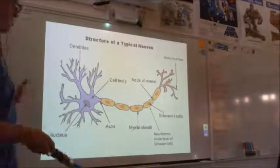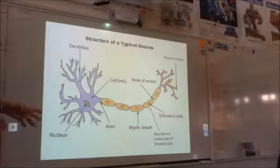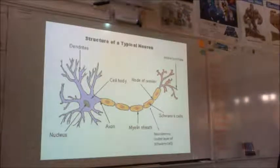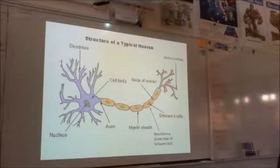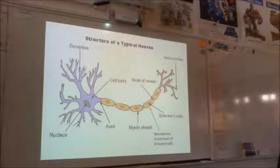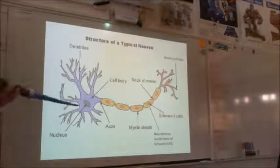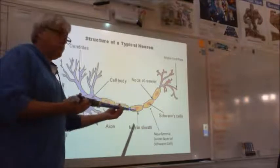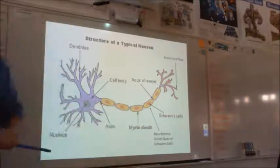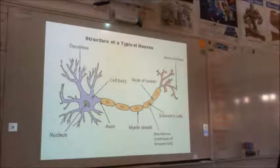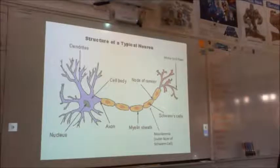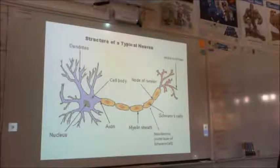That's the typical one that you'll see when you're going to label them. That's usually the one that you have to label. Can the sheath degrade? Yes, it can. And that will then cause the impulse to slow down, which creates problems. And there is a couple of conditions with that.